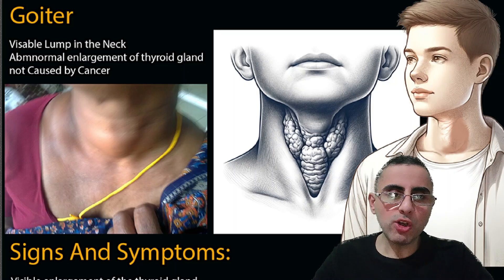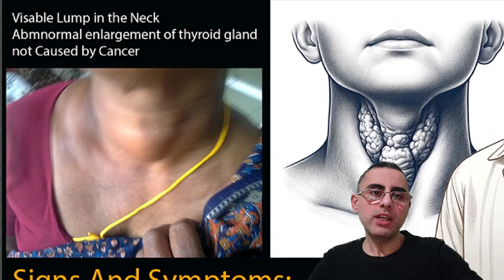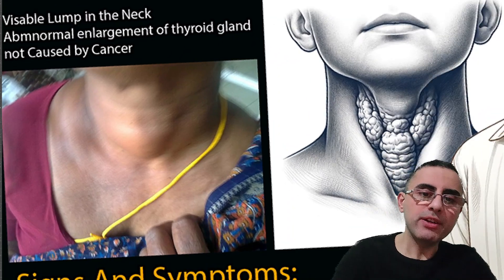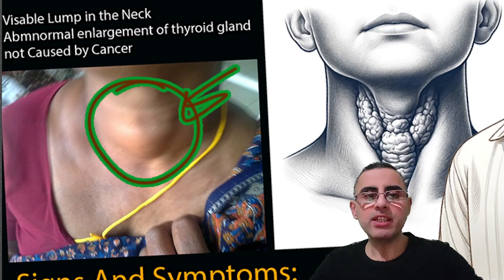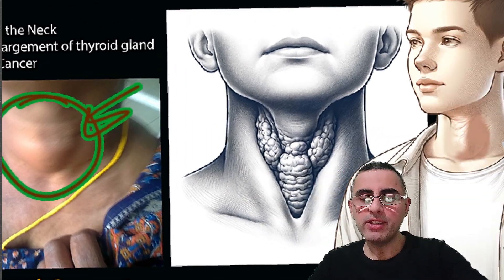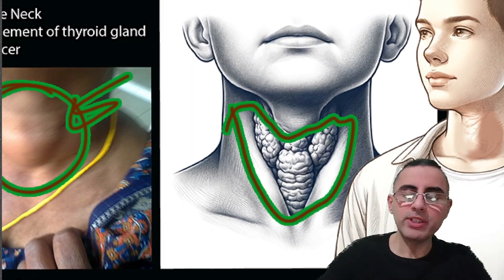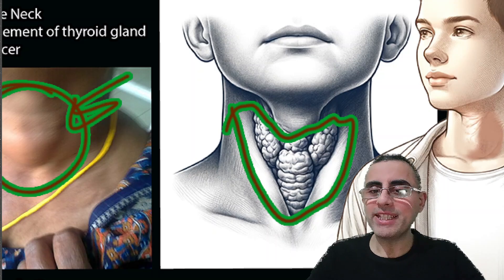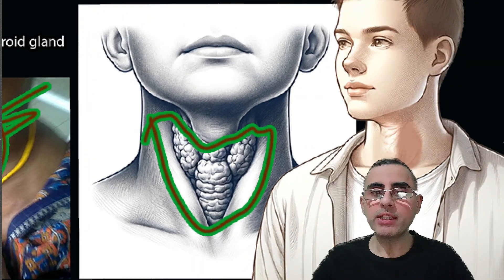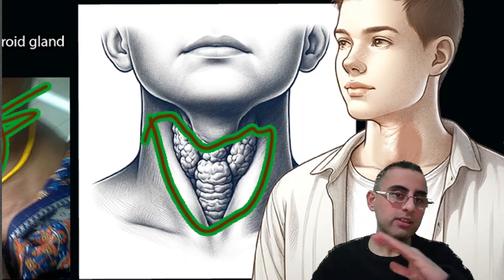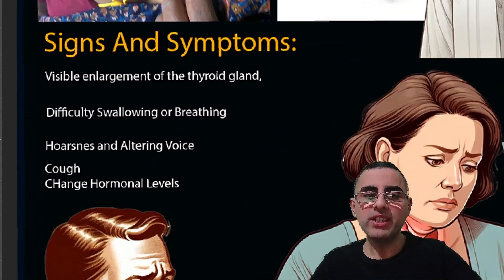We will talk about the five most common causes of goiter. In everyday life, goiter means there is a lump in the neck. Medically speaking, goiter means there is an enlarged thyroid gland, and this enlargement is not caused by cancer. If it is cancer, we call it cancer, but if it is enlargement of the thyroid gland with no cancer, we call it goiter.